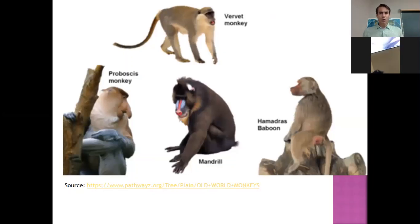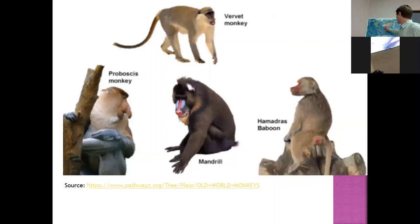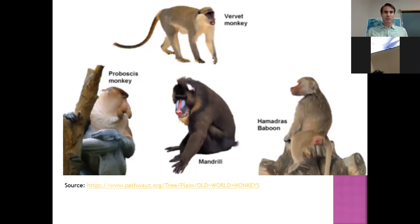Here are some pictures of Old World monkeys. We've been talking about baboons from the 'What Are Friends For?' article, but we can also see the proboscis monkey, the mandrill, and the vervet monkey — a selection of the Old World monkeys mostly found in Africa and parts of Asia. To me these seem a little more serious. They tend to sit on the ground or on limbs instead of swinging. There are no prehensile tails, and you can see a little more the evolutionary potential relationship between the Old World monkeys and the creatures that would lead to apes and human beings.